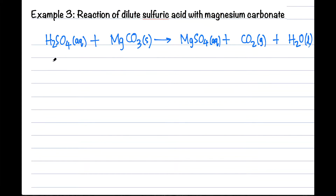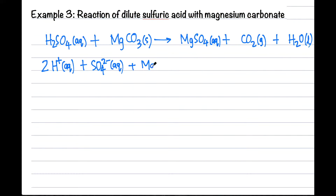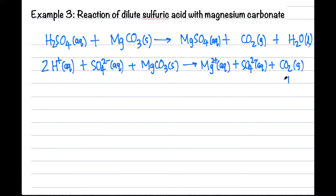Having done that, we split aqueous compounds into their ions. For sulfuric acid it gives us two hydrogen ions and one sulfate ion per molecule. Magnesium carbonate is a solid so we keep that. We split up magnesium sulfate because it is an aqueous compound. Now let's compare both sides and we find that sulfate is repeating on both sides — let's cancel that.